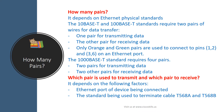How many pairs of wires in UTP cable are used to transmit data depends on the Ethernet physical standard being used. The 10 base-T and 100 base-T standards require two pairs of wires for data transfer — one pair for transmitting data and the other pair for receiving data. Only the orange and green pairs are used, connecting to pins 1, 2 and 3, 6 on an Ethernet port.